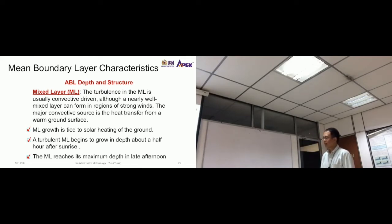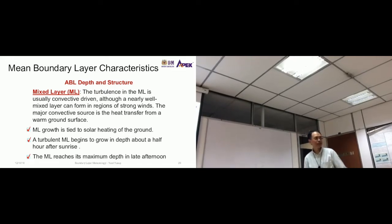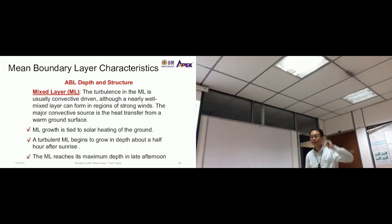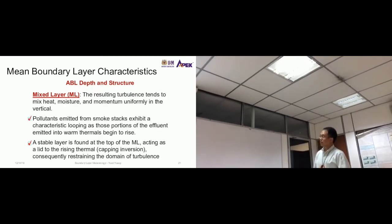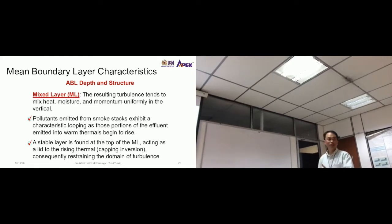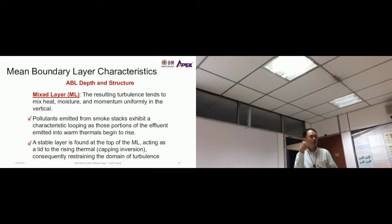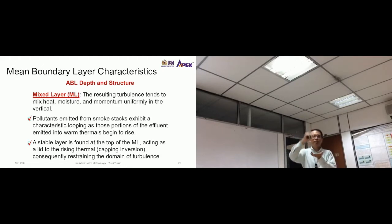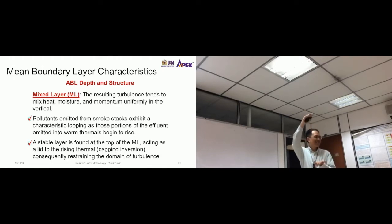The mixed layer reaches its maximum depth in the late afternoon, around 2 to 3 p.m. The resulting turbulence tends to mix heat, moisture, and momentum uniformly in the vertical. Once there is a mixed layer, concentrations of gases, moisture, and heat become well-mixed, so a sample at one vertical position represents the entire mixed layer.